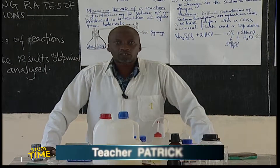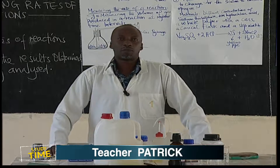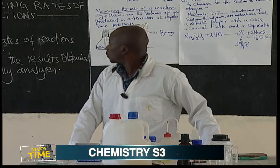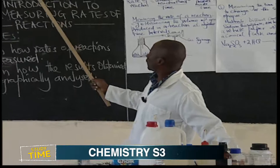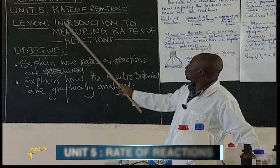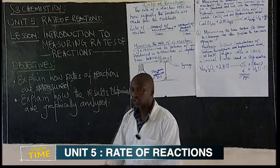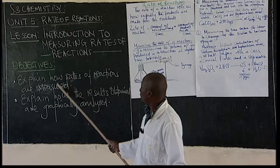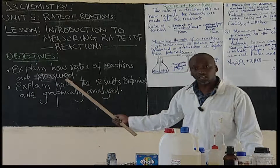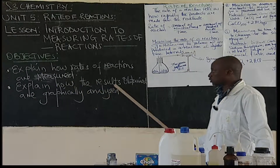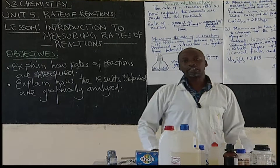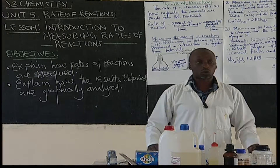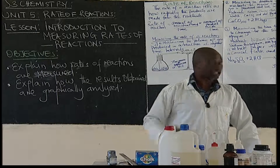Hello dear students, welcome back to this TV learning series program. I'm Teacher Patrick and I'll be with the senior theory chemistry class. We look at Unit 5, which is Rate of Reactions. Our lesson today will be talking about the introduction to measuring rates of reactions. By the end of the lesson, we'll be able to explain how rates of reactions are measured and how the results obtained are graphically interpreted or analyzed.